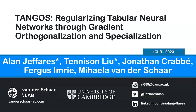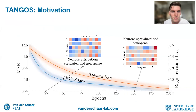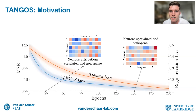I'll be presenting TANGOS, which is regularizing tabular neural networks through gradient orthogonalization and specialization. This was joint work with Tennyson Lou and co-authors Jonathan Crabby, Fergus Imrie, and others. Despite being ubiquitous in practical applications, tabular data has been less impacted by deep learning than other modalities with strong inductive biases such as images or text.